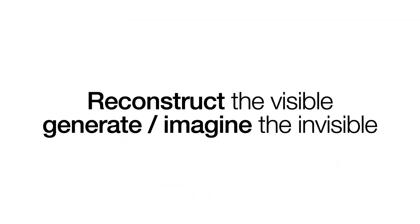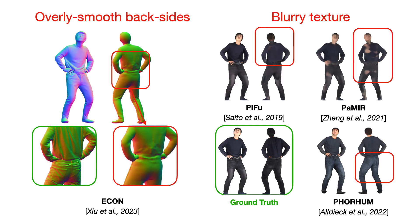Reconstruct the visible, generate, or imagine the invisible. The generator's ability to imagine is crucial. Take a look at these state-of-the-art reconstruction methods, which predict the backside from front observations without any imagination. This results in overly smooth surfaces and bleary textures, particularly in non-visible regions.